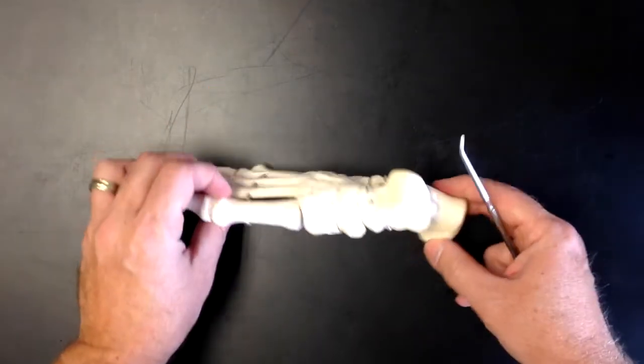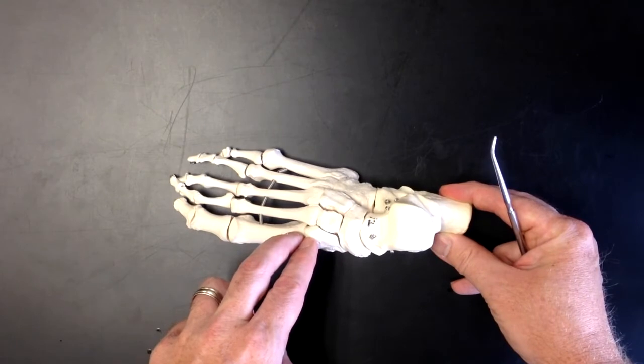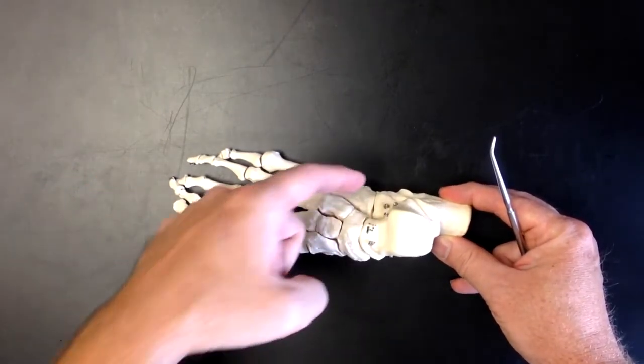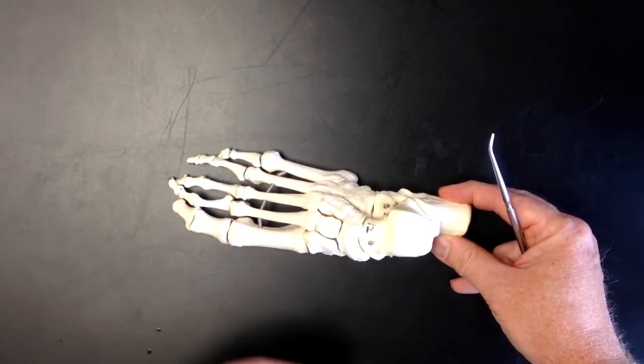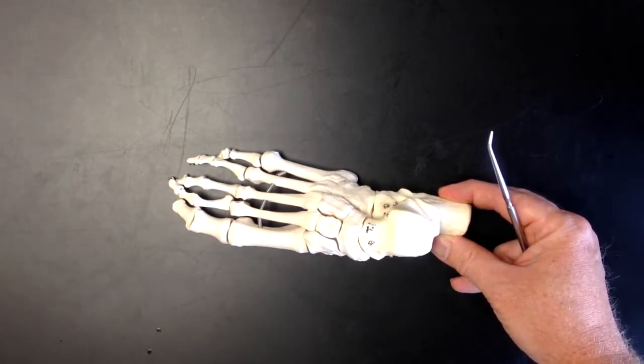On the dorsum of the foot, the tibialis anterior will also attach to those two bones. So sometimes tibialis anterior and fibularis longus muscles are considered or called the stirrup muscles.